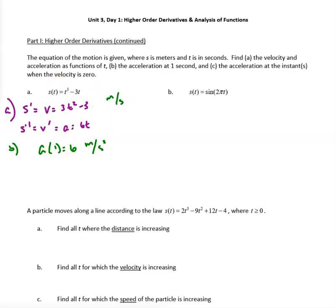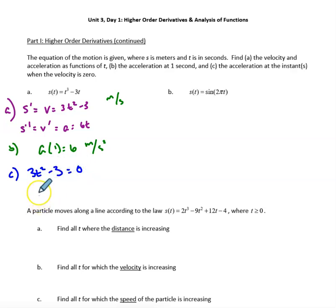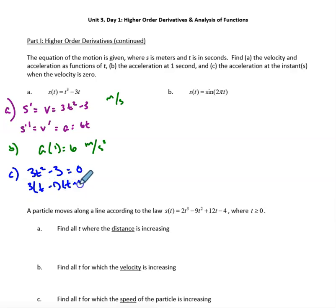The last part of this problem asks for the acceleration at the instant when velocity equals zero. For part c, take the velocity function 3t squared minus 3 and set it equal to zero. Solving by factoring: 3 times (t minus 1) times (t plus 1) equals zero.